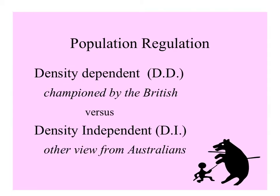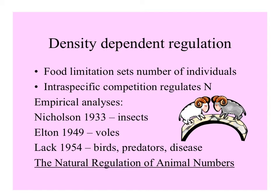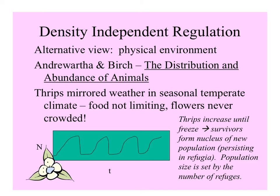There has long been a debate among ecologists as to which group of factors are most important in regulating populations: density-dependent factors or density-independent factors? With density dependence, the number of individuals can be set by the amount of food available, and competition within a species regulates population size. Famous empirical analyses include those by Nicholson on insects, Charles Elton on voles, and Andrew Lack with birds, their predators and disease. Lack authored the book 'The Natural Regulation of Animal Numbers.' The alternative view is that the physical environment is most important — density-independent regulation.